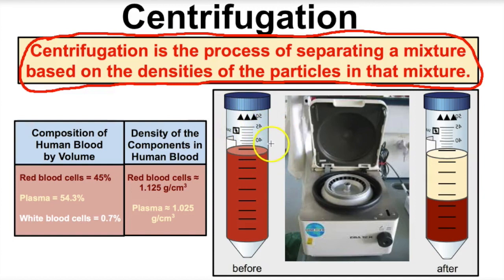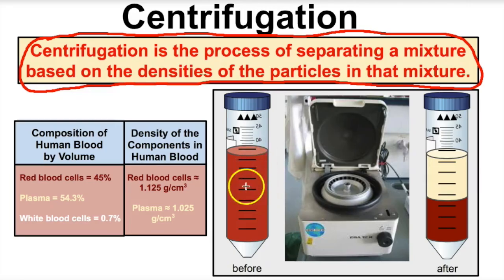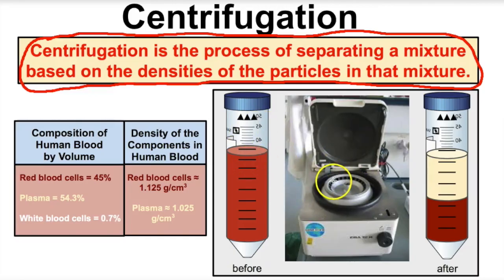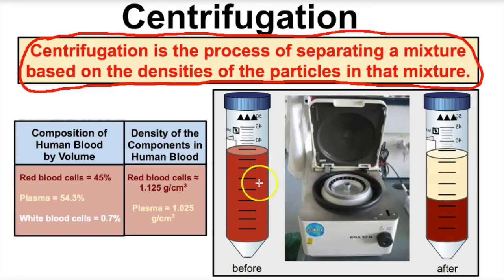Let's take a look at an example. When you go to the doctor's office or a nurse visit, you might have to have your blood drawn. They're going to put it in a little vial. Blood is a mixture — it's a mixture of red blood cells, plasma, and white blood cells. They're going to take a sample of this blood, put it in this vial, and stick it in this machine right here, which is called the centrifuge. They're going to close the lid and turn it on, and this centrifuge is going to spin at a high rate of speed. The more dense red blood cells end up going to the bottom, while the less dense blood plasma ends up going to the top.